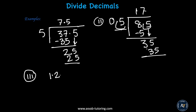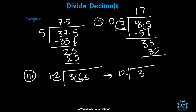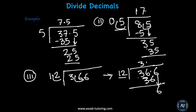Let's do another one: 3.66 divided by 1.2. Move one decimal place — that becomes 12 into 36.6. How many times does 12 go into 36? 3 times. 3 times 12 is 36. Subtract, get 0. Move the decimal, bring the 6 down. Can you divide 6 by 12? No. So put a 0 on top and bring another 0 — you have 60. How many times does 12 go into 60? 5 times. 5 times 12 is 60. The answer is 3.05.